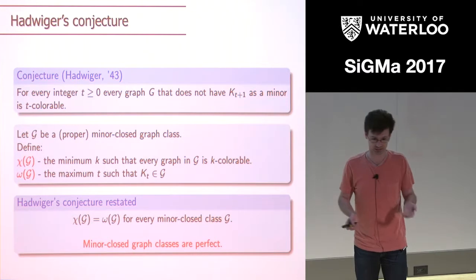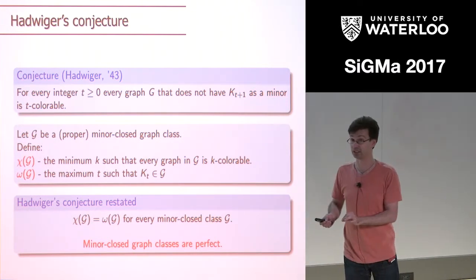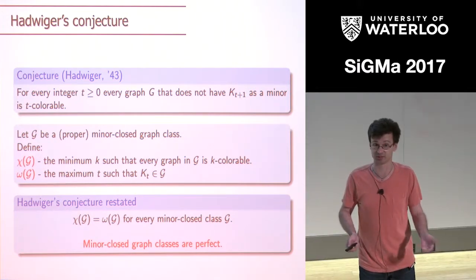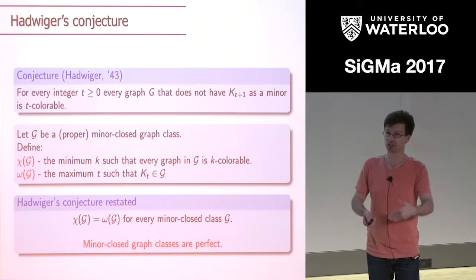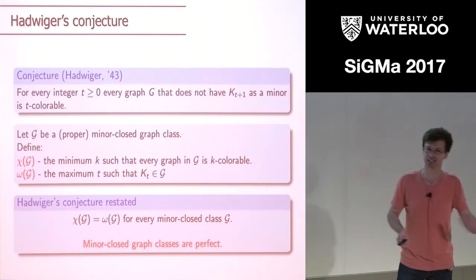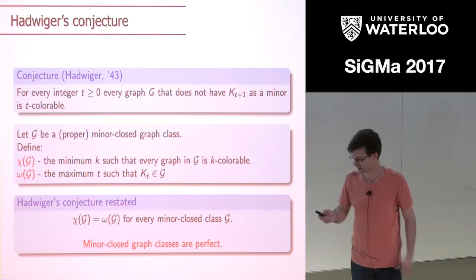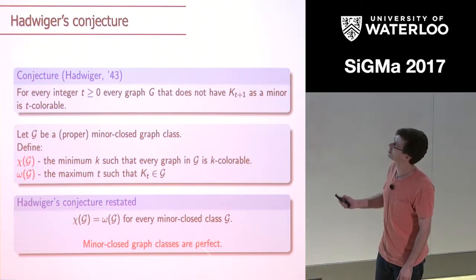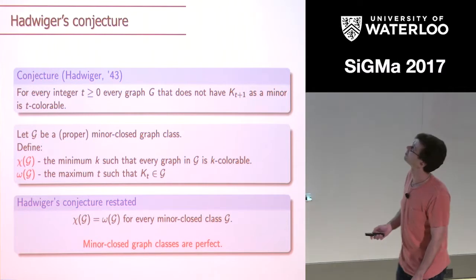Hadwiger's conjecture, restated this way, says that for every minor-closed class the chromatic number equals the clique number — so minor-closed classes of graphs are perfect. Not all graphs are perfect, but all minor-closed classes are, if Hadwiger's conjecture is true. If one is being careful, one should note that if Hadwiger's conjecture is true then for every subclass of every minor-closed class this is also true, so it does say exactly that minor-closed classes of graphs are perfect.